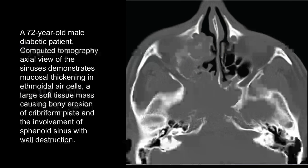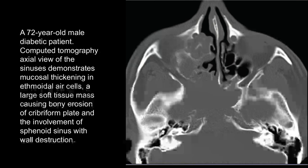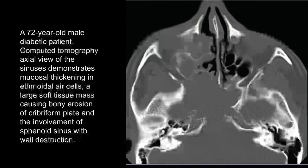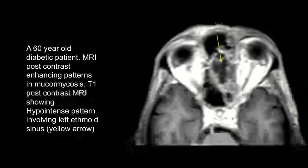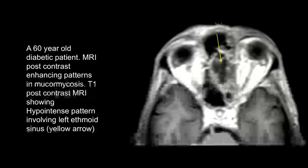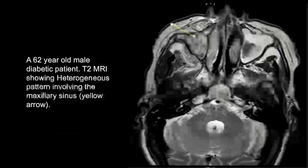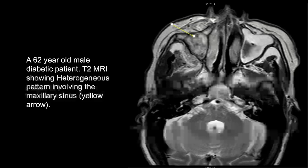In this non-contrast CT of a 72-year-old male, there is mucosal thickening in the ethmoid air cells and a large soft tissue mass causing bony erosion of the cribriform plate and involvement of the sphenoid sinus with wall destruction. In this T1 post-contrast MR image, a hypointense pattern is seen involving the left ethmoid sinus. In this T2-weighted MR image, a heterogeneous pattern of involvement of the maxillary sinus is seen as indicated by the yellow arrow.